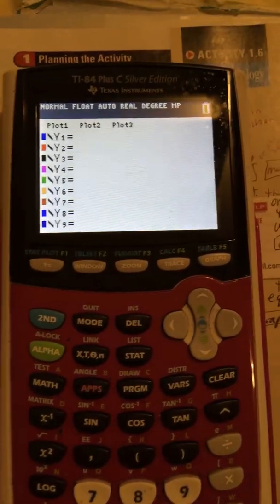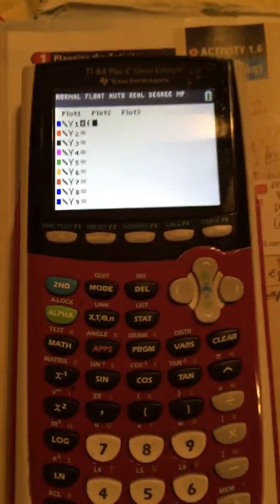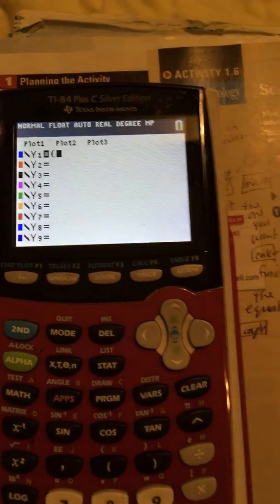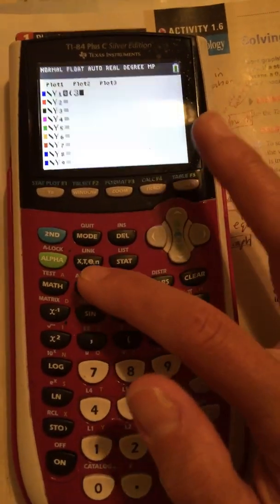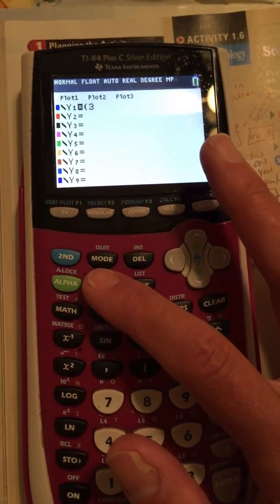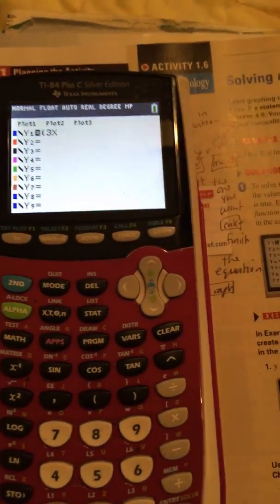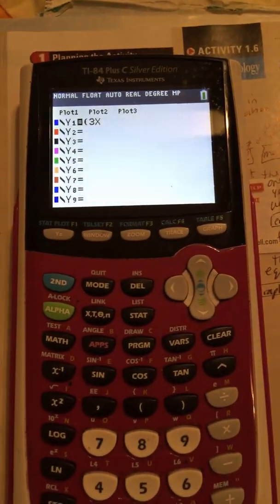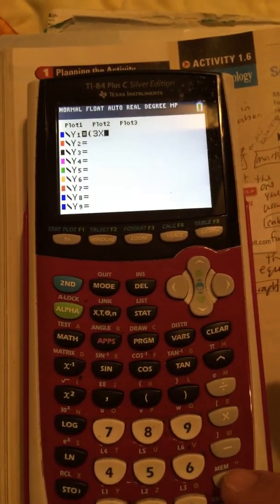And now I'm going to put in my inequality. And I'm going to do it in parentheses. So I start with the beginning parentheses. And my inequality is 3X. So this is 3. And then that button right there with an X, T, theta, N. If you press it, because of the setting, how it is in mode, it will come up with an X right now. So that's what it usually does. And then it is plus 2, 3X plus 2.